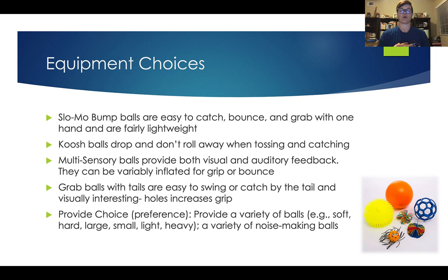Slow-mo balls are easy to catch, bounce, and grab — they're bumpy and lightweight. Koosh balls have strands coming out and don't roll quickly, making them great for tossing, catching, or kicking. When practicing a soccer dribble, using something that won't roll 10 feet away when tapped can increase practice trials and success for students with ASD.